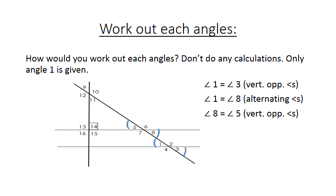And now we can also work out 9. Angle 9 is vertical opposite to 11. Angle 12 is vertical opposite to angle 10. We also have angle 13, vertical opposite to angle 15. And angle 14, vertical opposite to angle 16.